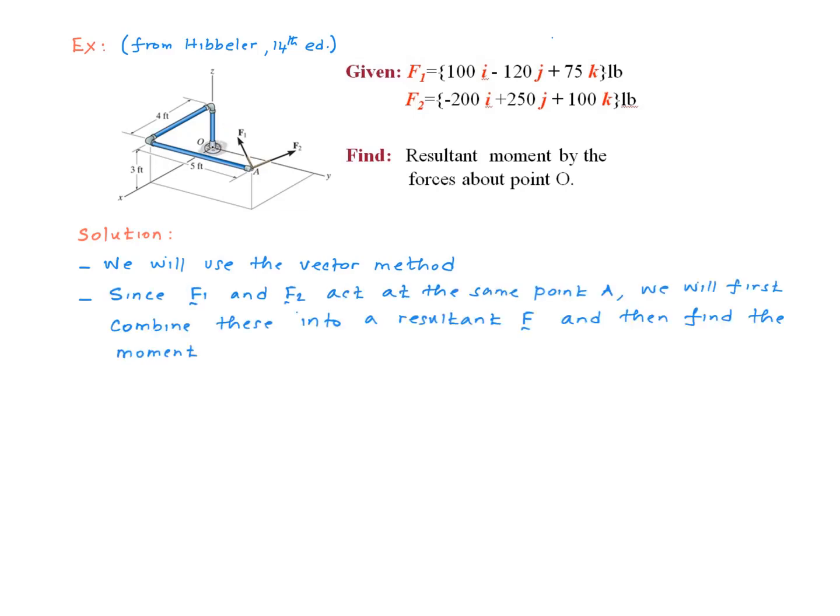Since both forces, F₁ and F₂, are acting at the same point, point A, it's convenient for us to combine the two into one resultant and then find the moment of that resultant. So how do we add two vectors?